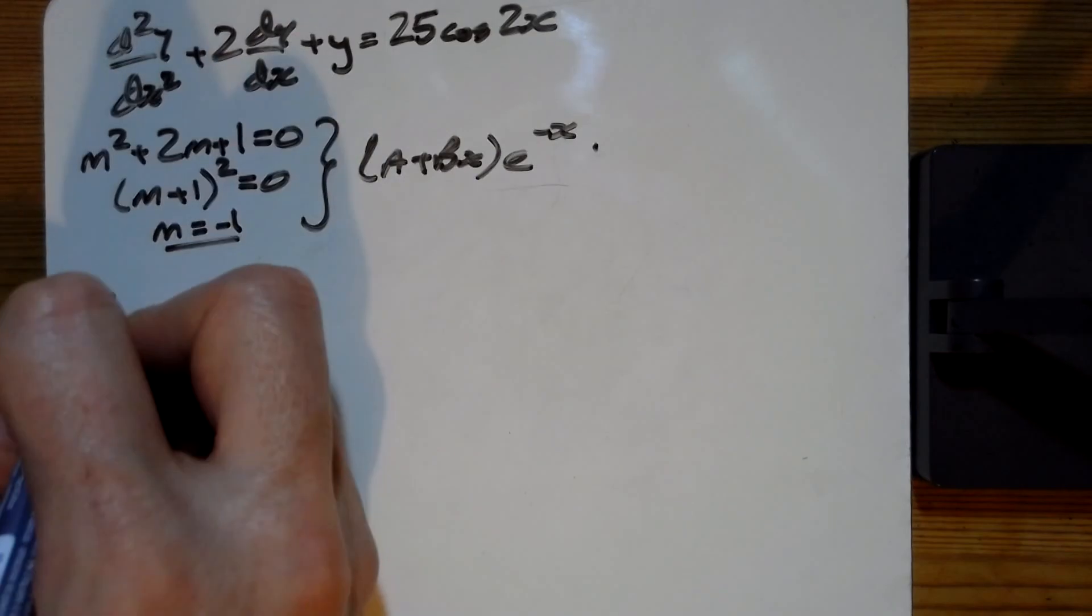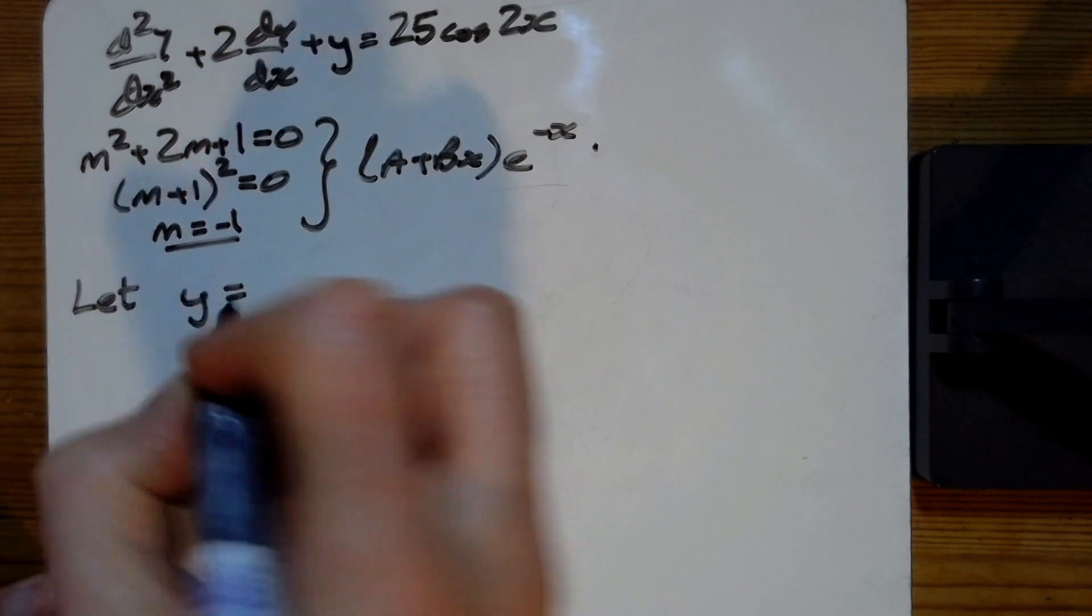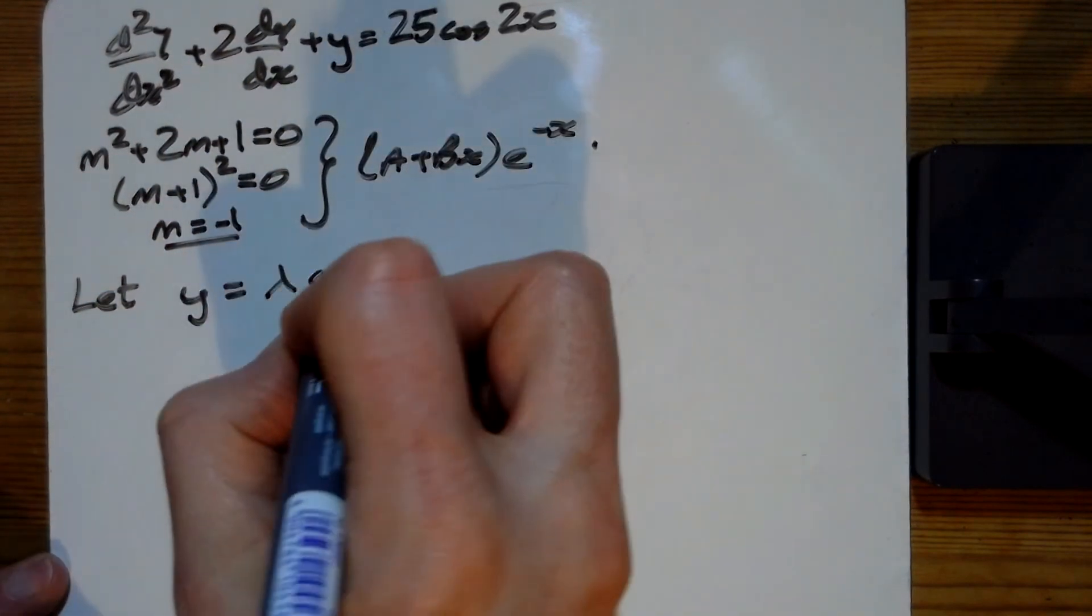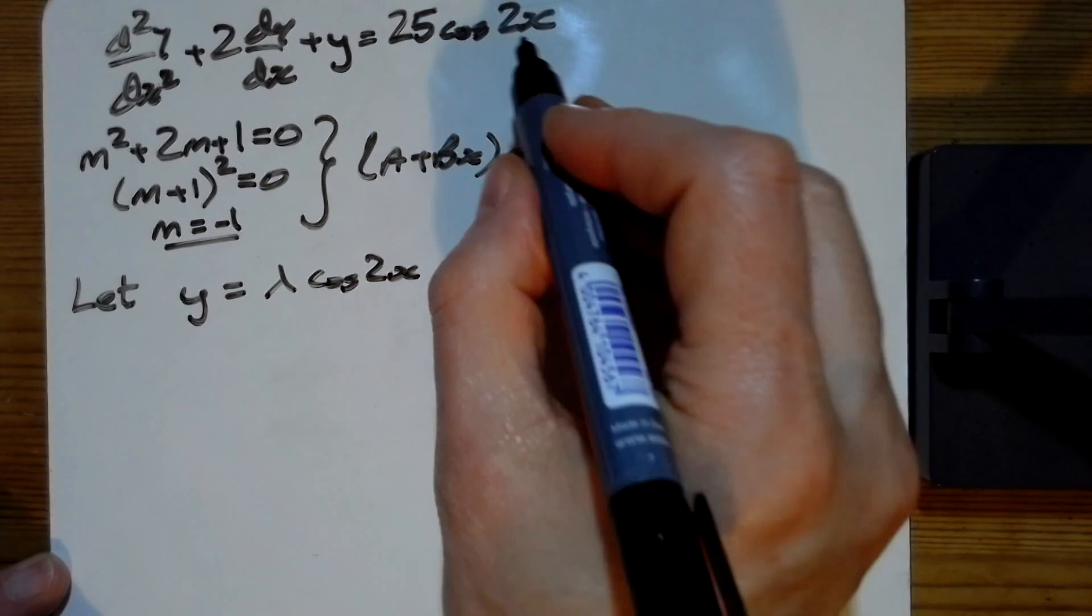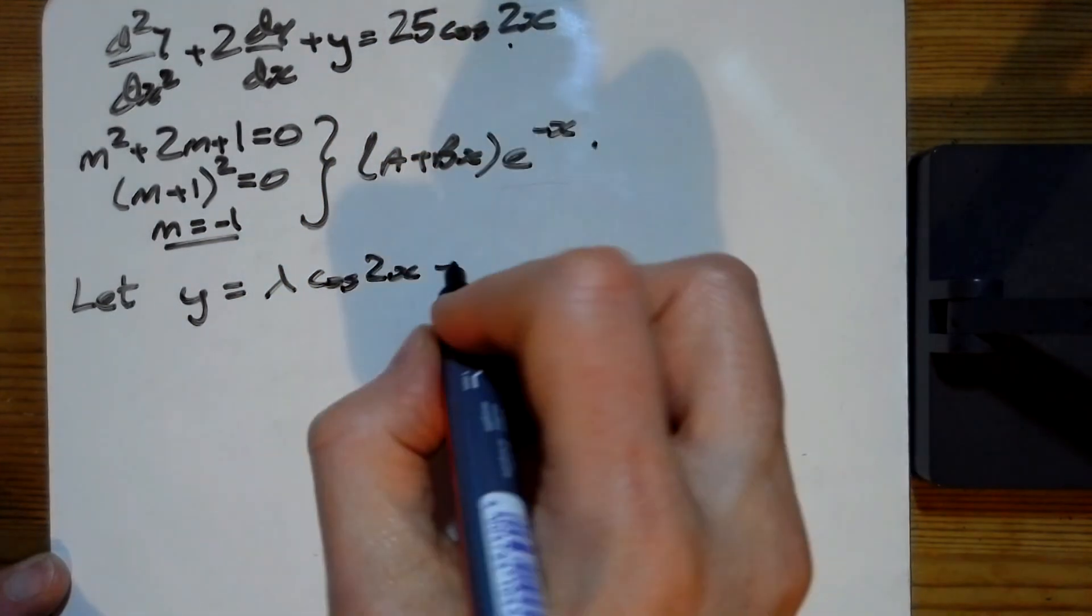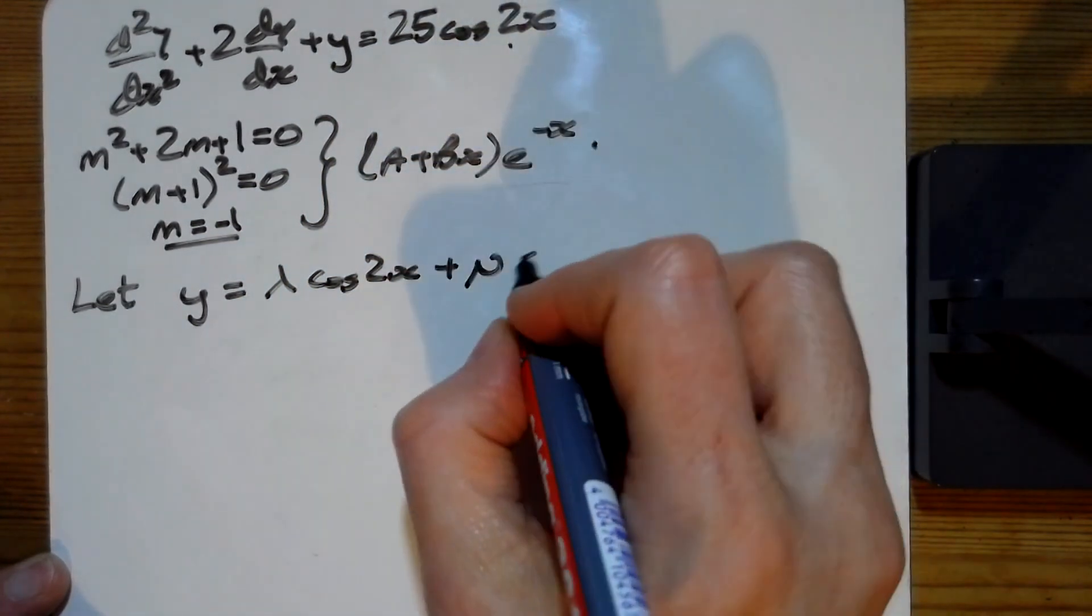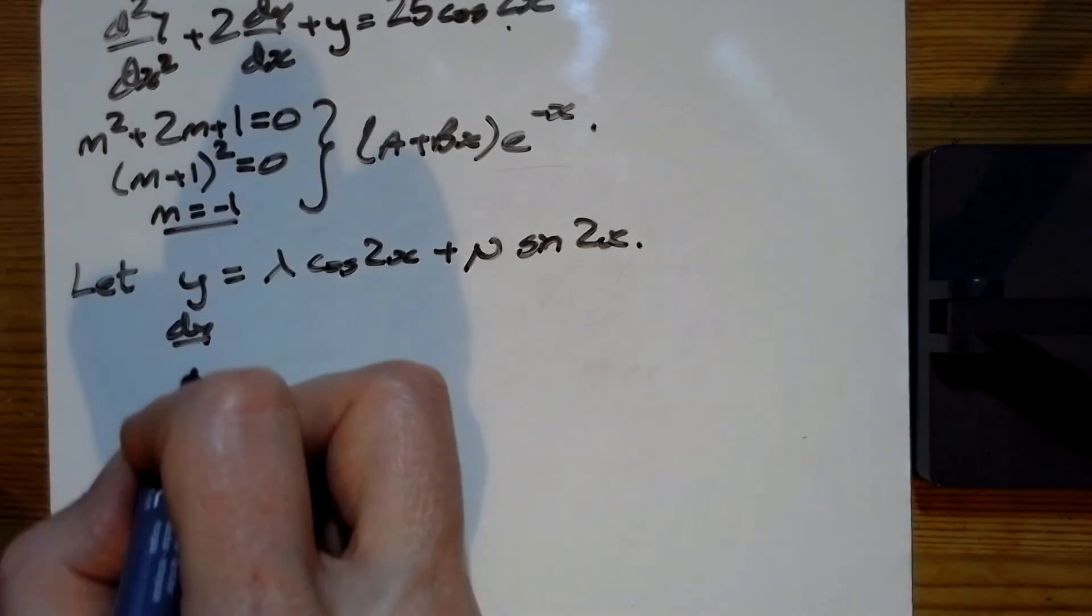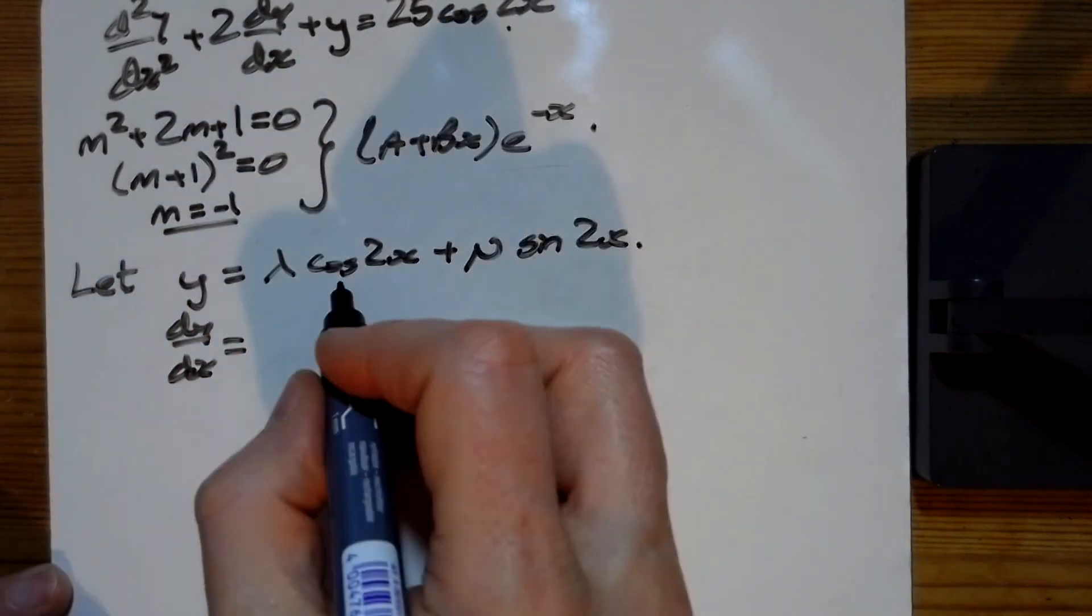So what we're going to try: we let y equal some number λcos(2x) because there's a 2x here, plus some number μsin(2x). We need to differentiate that. Differentiating, cos goes to minus sine and we bring the 2 out.